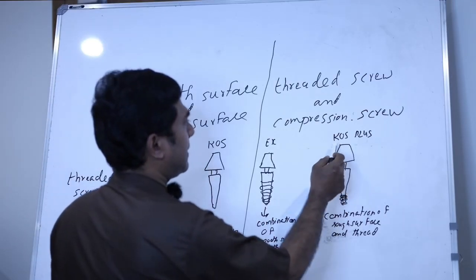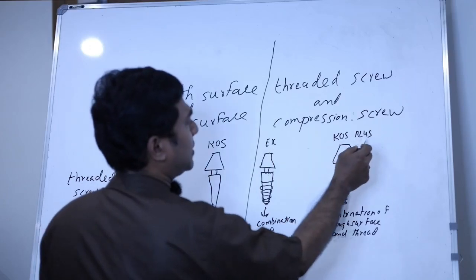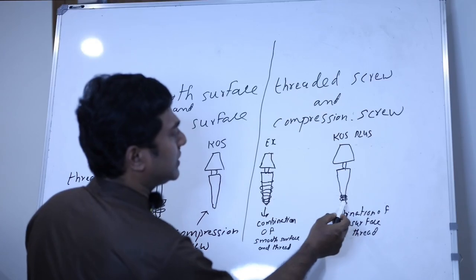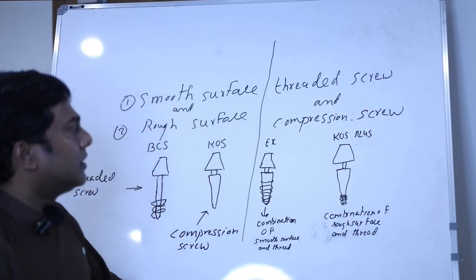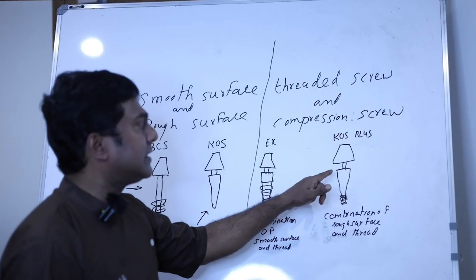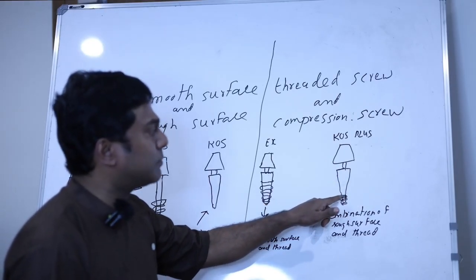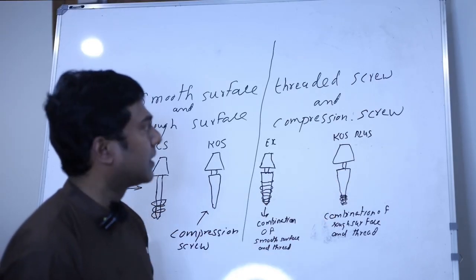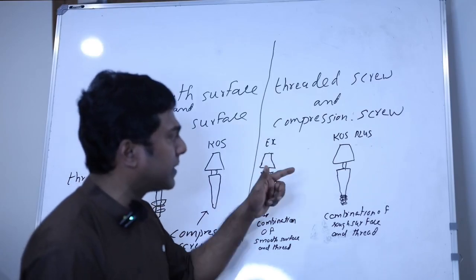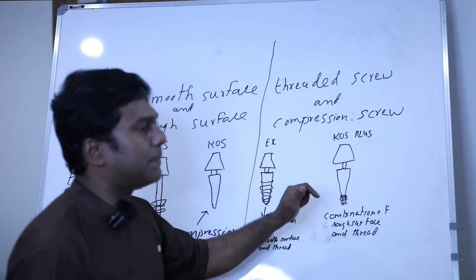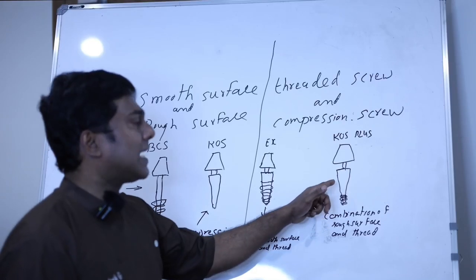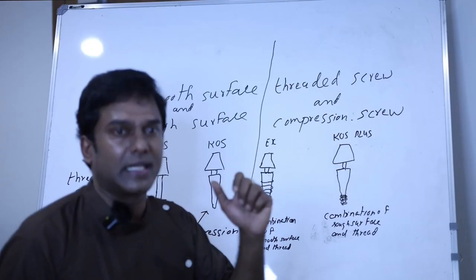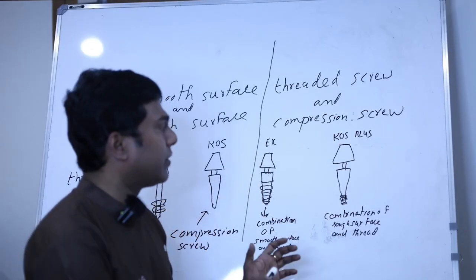Coming on to KOS and KOS+: the design is the same but KOS+ has threaded screws in the apicalmost portion. It functions as a compression screw — the body is rough surface while the apical thread area is smooth surface. This combination of rough compression screws and apical threads is meant for placement into the floor of the maxillary sinus.